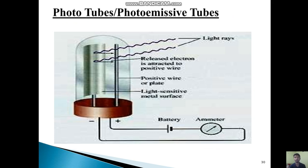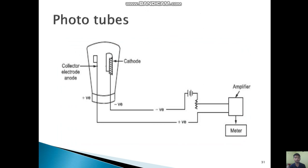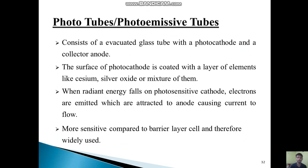After that we have the photo tube or photo emissive tube. Here you can see the light rays. The released electrons are attracted to the positive wire. One positive wire and one negative wire or plate. You can see a light-sensitive metal surface and battery connected with the ammeter. This is the schematic diagram of this detector.